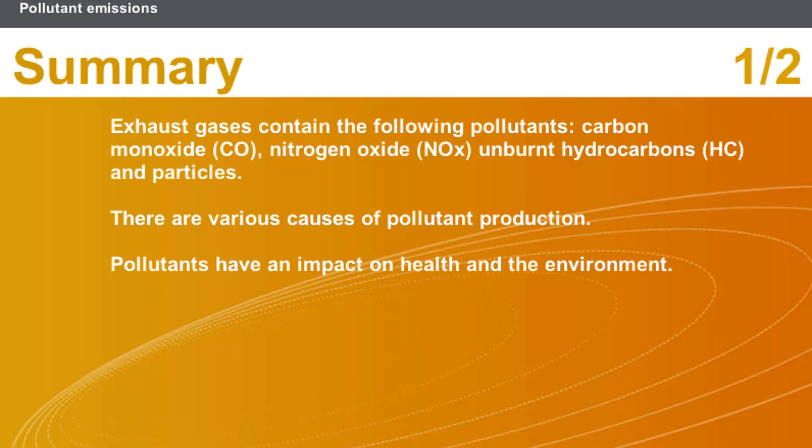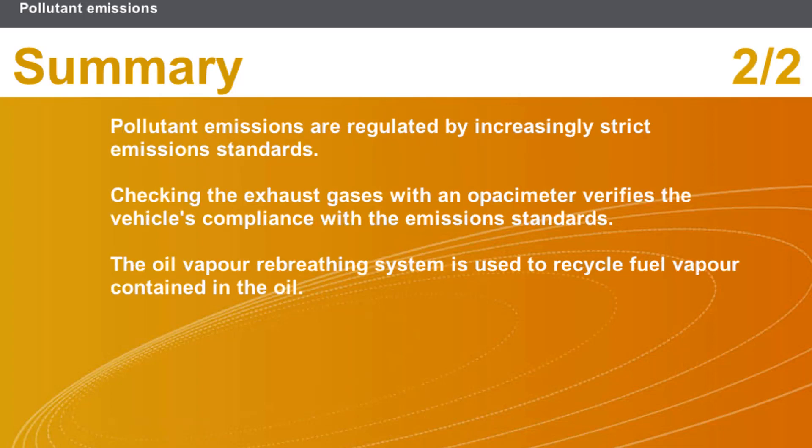In this section we covered the following points: Exhaust gases contain pollutants including Carbon Monoxide (CO), Nitrogen Oxides (NOx), Unburnt Hydrocarbons (HC), and Particles. There are various causes of pollutant production. Pollutants have an impact on health and the environment. Emissions are regulated by increasingly strict standards, verified using an opacity meter. The oil vapour rebreathing system recycles fuel vapour contained in the oil.